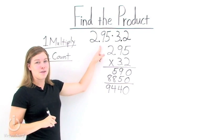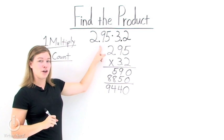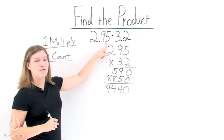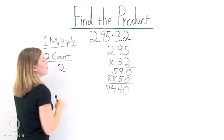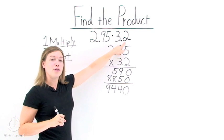So take 2.95. How many numbers are after our decimal point? We have 1, 2. Same thing with 3.2. There's one decimal.